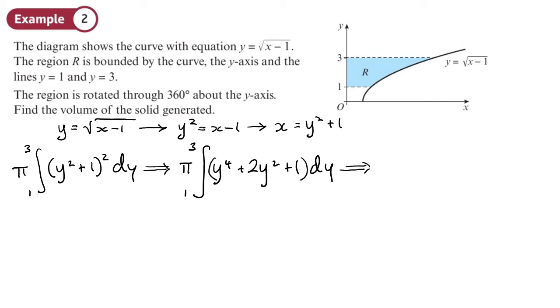So from there, I'm now going to integrate. I'll put the π there, and remember my limits are 1 and 3. y to the power 4 is going to become one-fifth y to the 5. 2y² is going to become two-thirds, because you add 1 to the power and divide by the new power: two-thirds y cubed. And 1 will become y, like this.